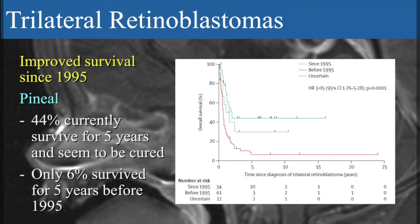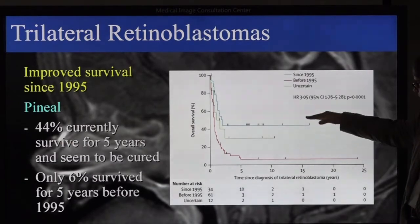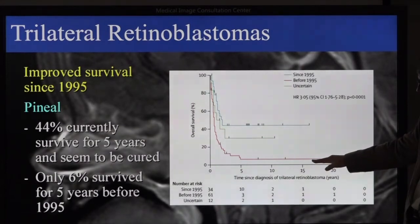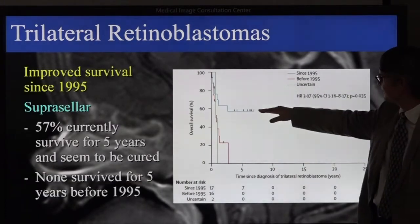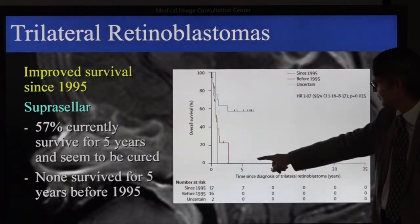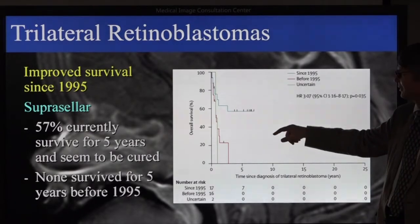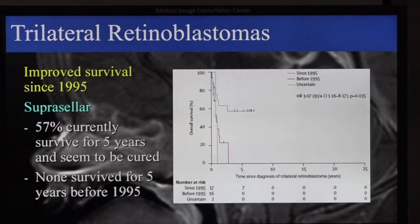We can divide these into pineal and suprasellar tumours. The pineal tumours are probably diagnosed a little later, giving 44% survival at five years, compared to only 6% before 1995. For the suprasellar tumours, we now have 57% survival, where it was nil before. So here the treatment paradigm change to high-dose chemotherapy may make a real difference, and because suprasellar tumours develop earlier and are more reminiscent of the original retinal tumour, they may also have a more favourable response to chemotherapy.